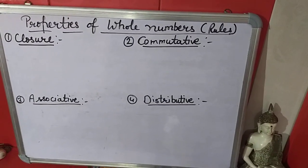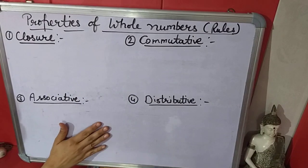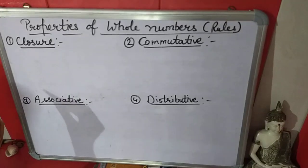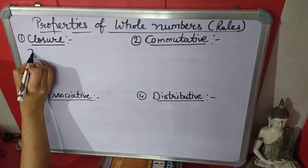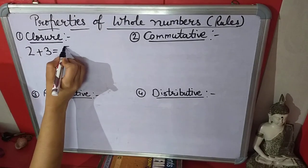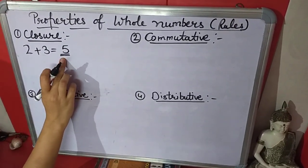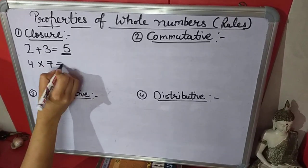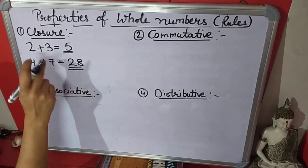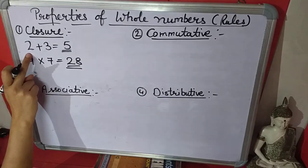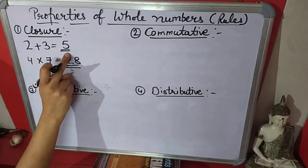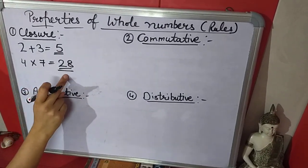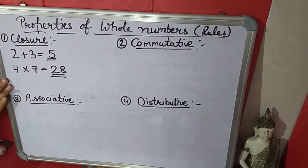Now the next topic is properties of whole numbers. There are 4 properties. The first is the closure property. In this property, if you add any 2 whole numbers, the result will be a whole number. In multiplication also, if we multiply any 2 whole numbers, the result will be a whole number. That is the closure property.